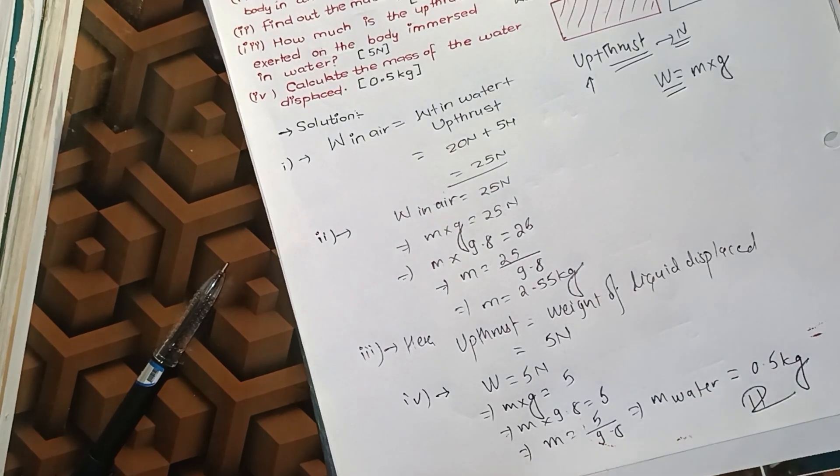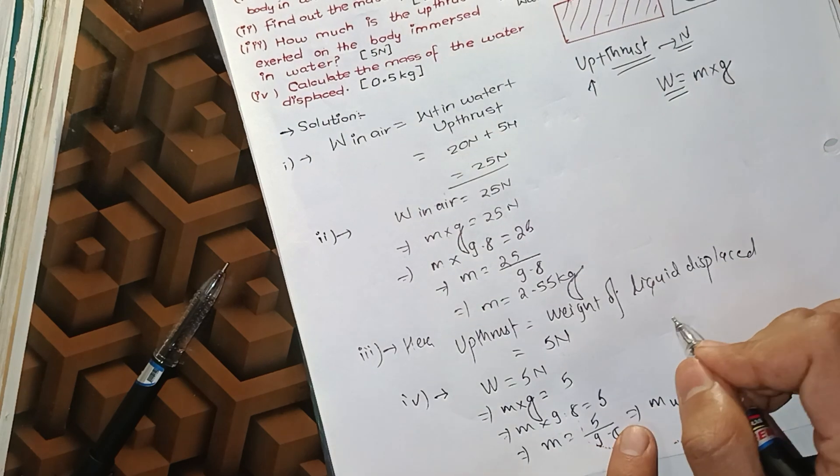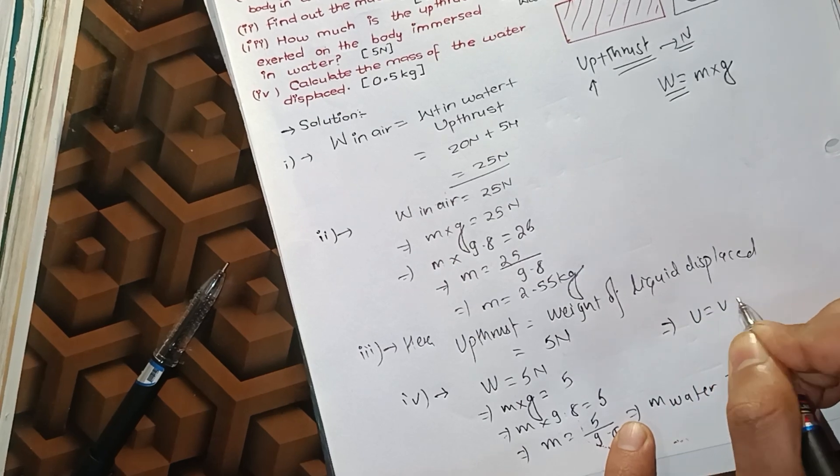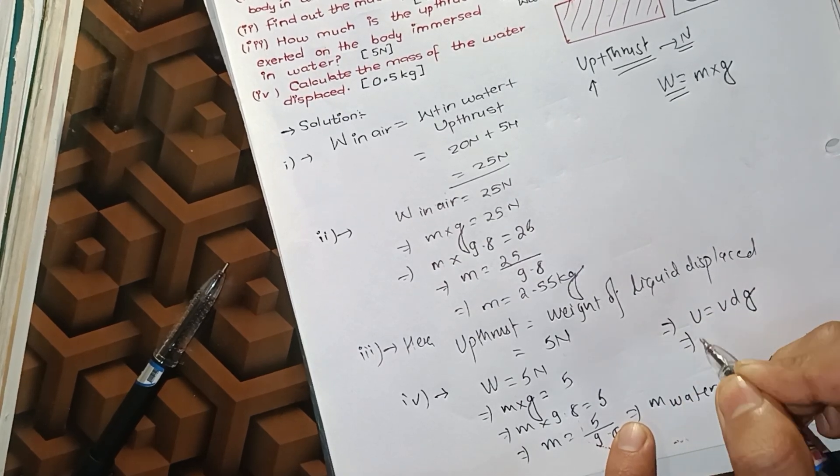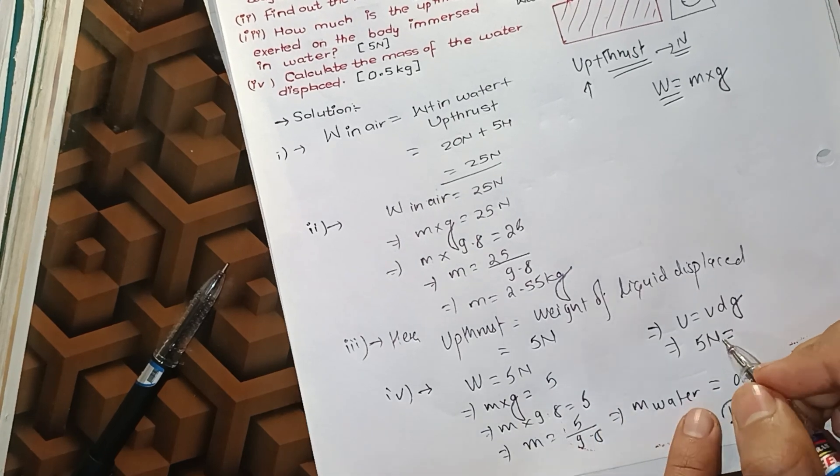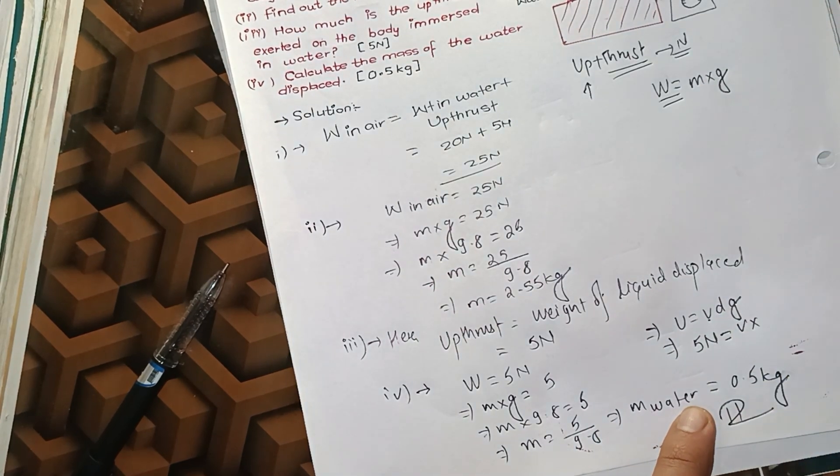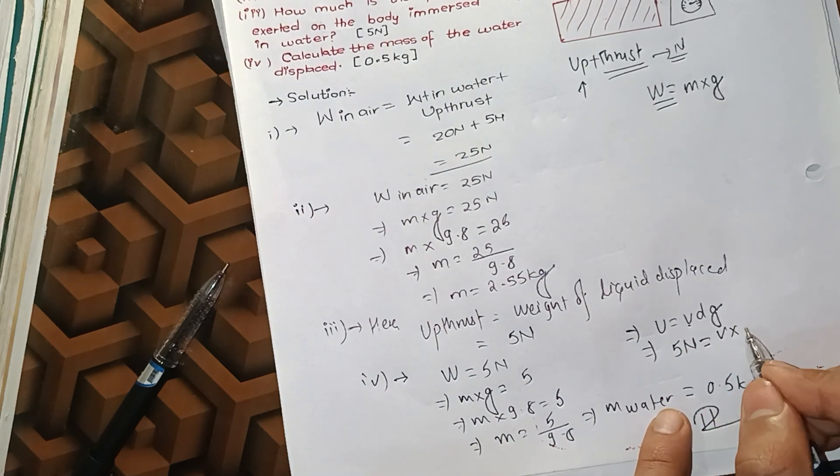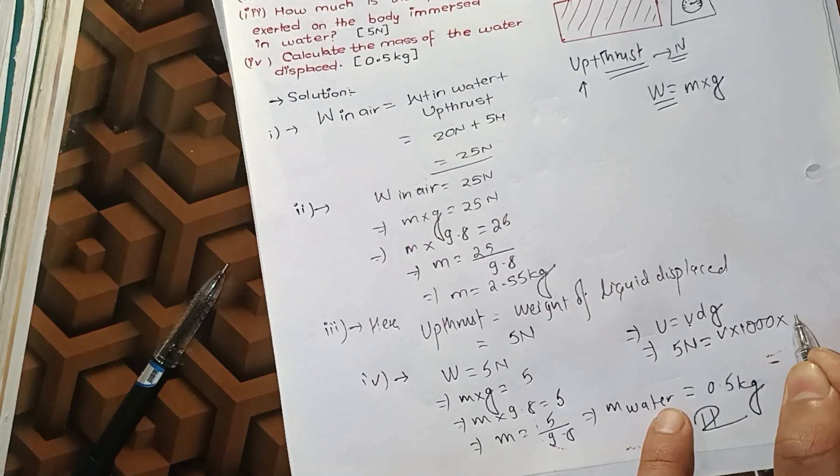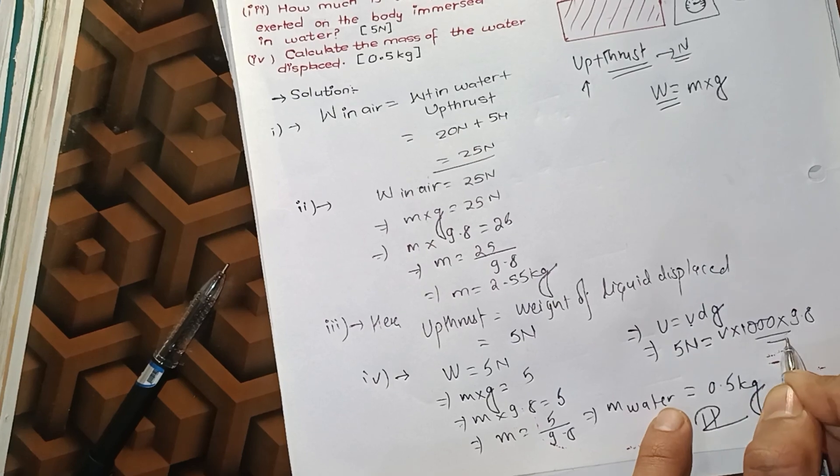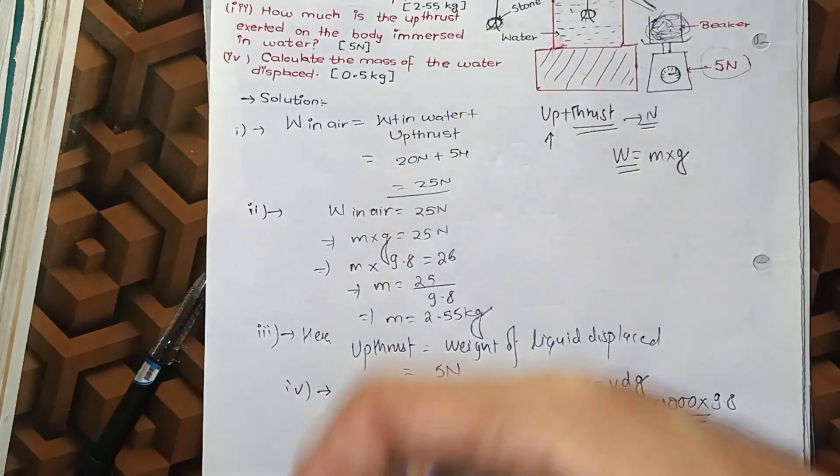To find the volume of liquid displaced, we use the formula: upthrust equals ρVg. This is 5 newton. The density of water is 1000 kg/m³, times V, times 9.8.